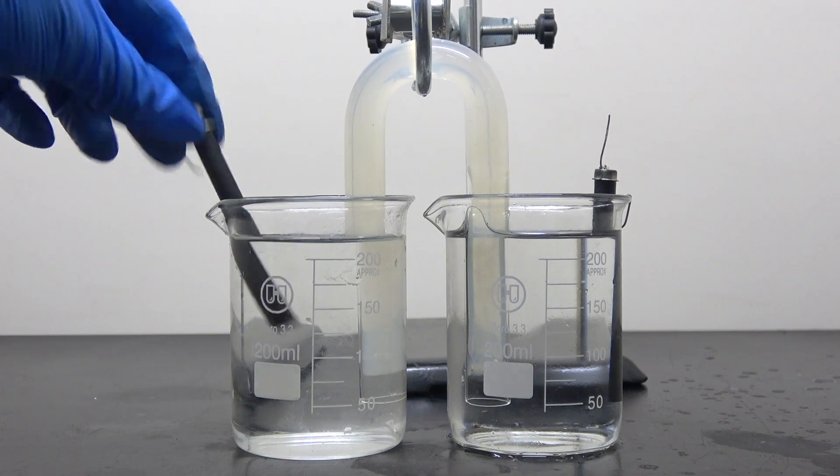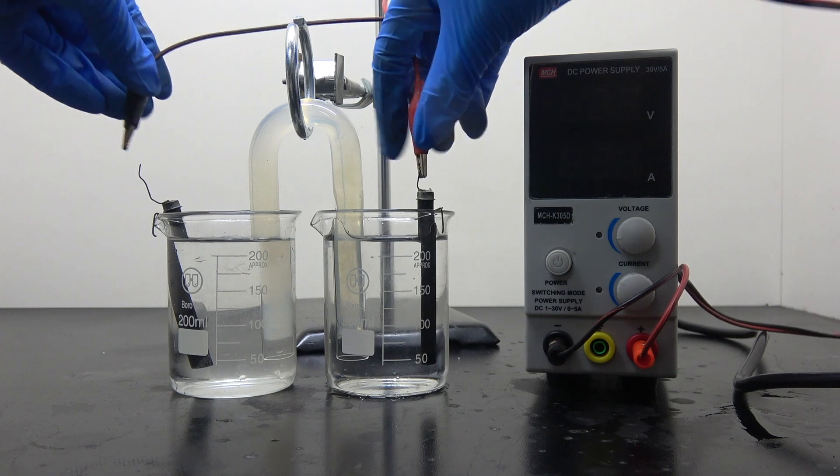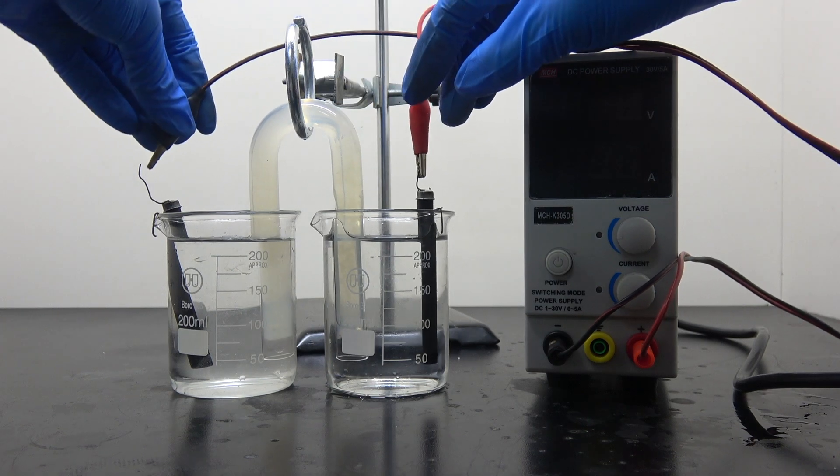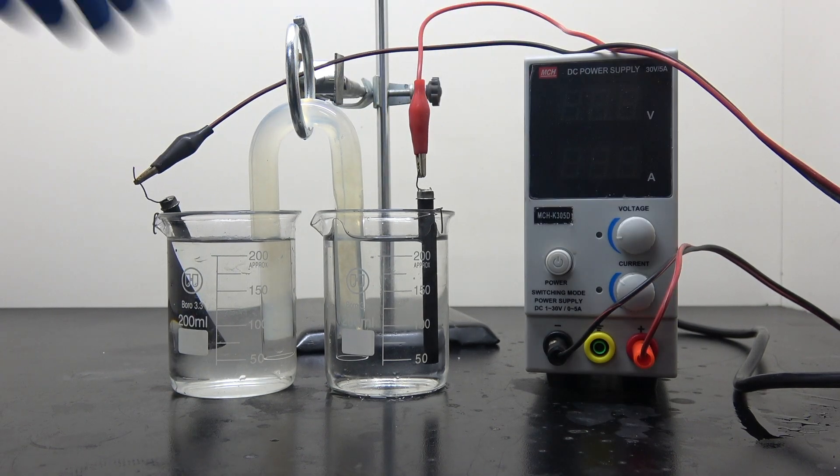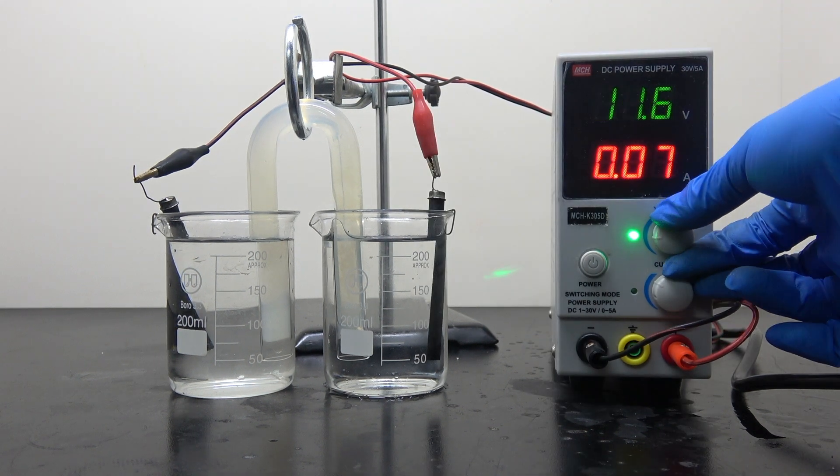Place the two electrodes into each beaker and hook them up to a DC power supply. In this particular electrolysis, the way that electrodes are connected does not matter as much. The only difference it makes is in which beaker the bromine will be produced.